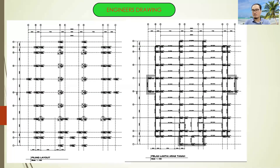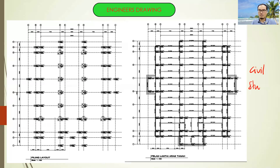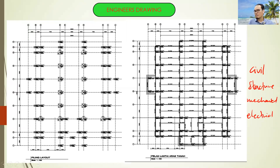It also shows the finishing — what type of finishing the architect wants for the building. The engineer's drawing can be divided into several parts, which is the civil, the structural, the mechanical, and the electrical. It gives details on engineering aspects.